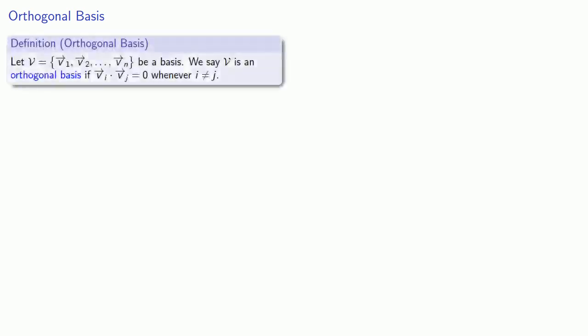We'll define that as follows. Let V be a set of basis vectors. We'll say that V is an orthogonal basis if vi dot vj is 0 whenever i is not equal to j. If it also turns out that the norm of vi equals 1 for all of our vectors, then we also say that V is an orthonormal basis.